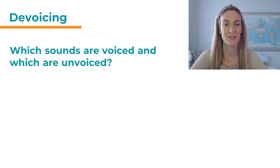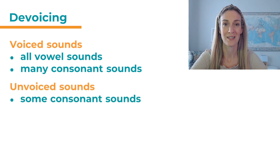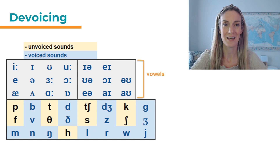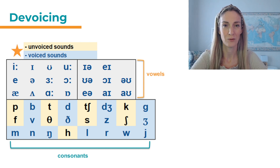So which sounds are voiced and which ones are unvoiced? In English all the vowel sounds are voiced, and quite a lot of consonants too. And then we have a couple of other consonants that are unvoiced. You can see them here in the sound chart. The top half shows all the vowel sounds and all of those are voiced. In the bottom half we can see the consonant sounds — the blue ones are voiced and the yellow ones are unvoiced.